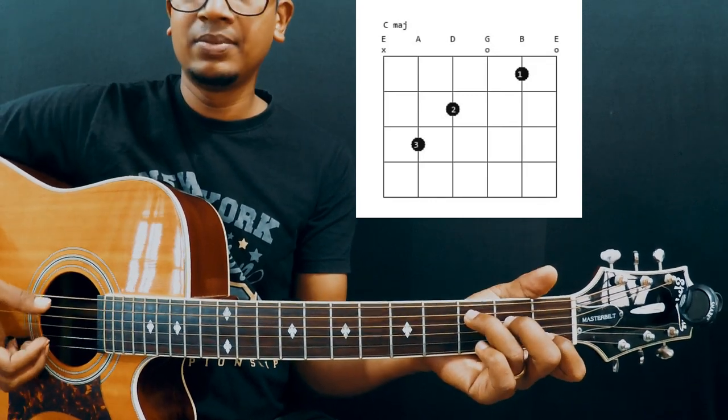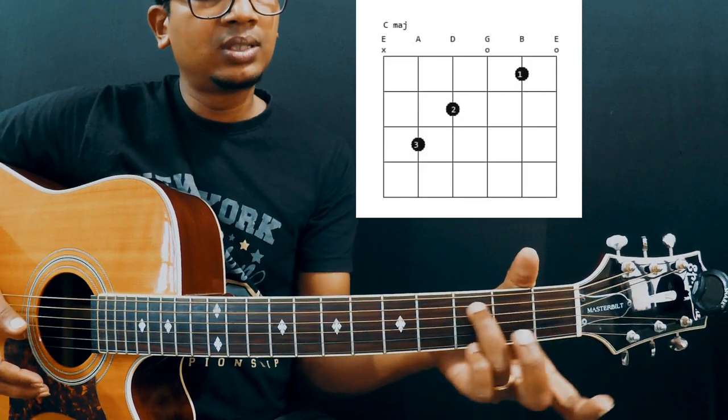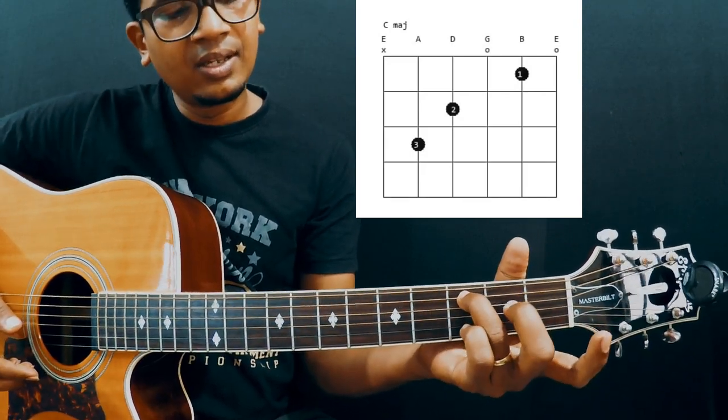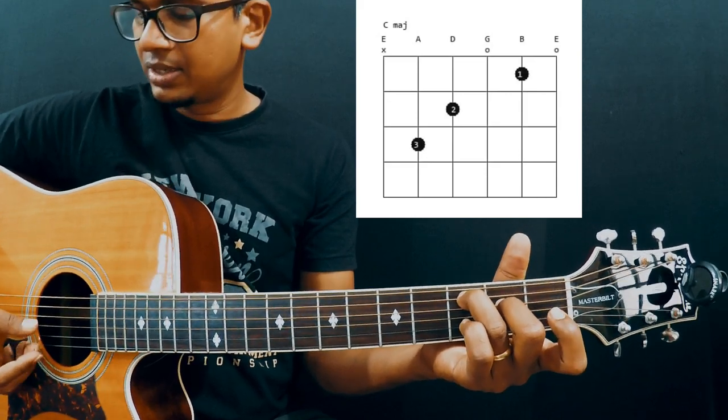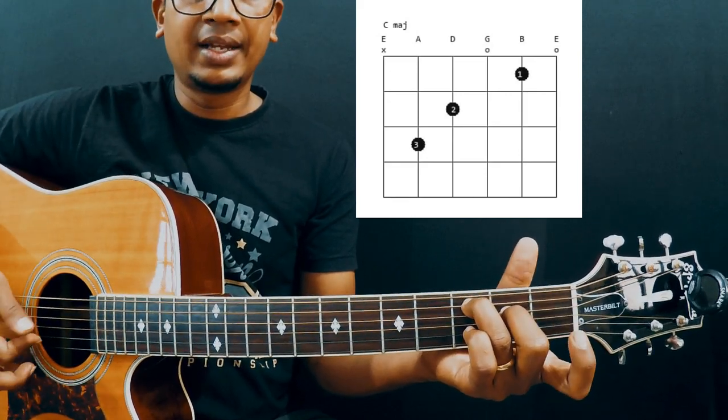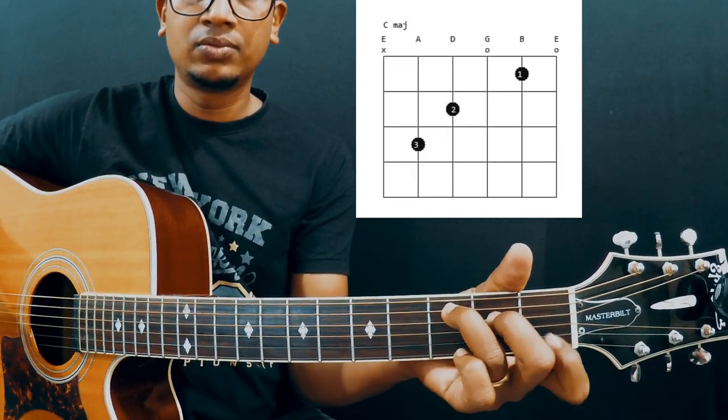You have to start from 5th string. Take your ring finger and place it on 3rd fret of the 5th string. And your middle finger on 2nd fret of the 4th string. 3rd string open, 2nd string.